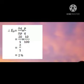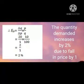Using the formula, Price Elasticity of Demand equals change in quantity demanded over change in price, times original price over original quantity demanded. That gives us 20 over 1 times 10 over 100, and the answer is 2, or 2%. It means that the quantity demanded increases by 2% due to a fall in price by 1.